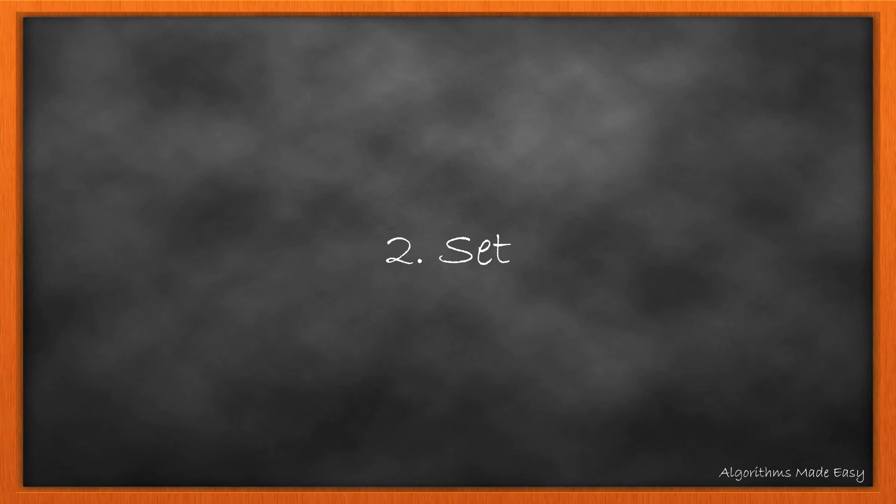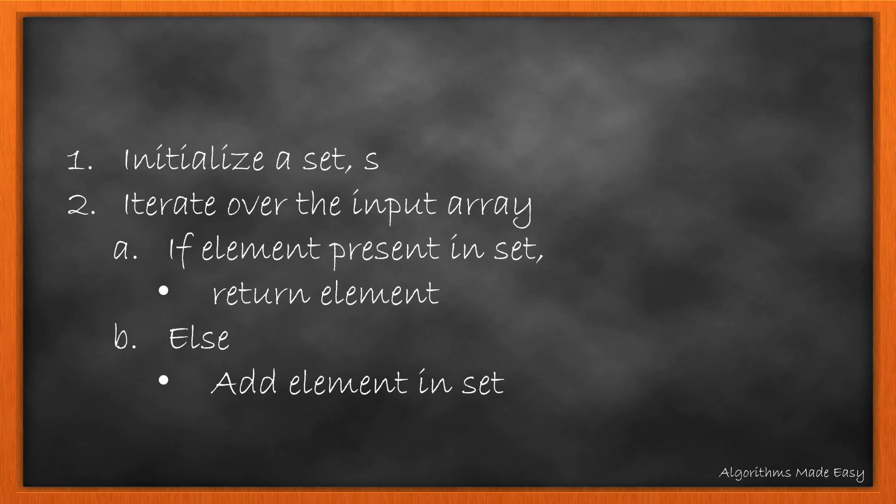Second method is to use set. This way we can reduce the time but we will be using extra space. So we will first initialize the set, then iterate over the array and try to add the element in the set. If the element already exists, we will return the element, else we will add it in the set. Here the time complexity reduces to O(n), but the space complexity also becomes O(n).